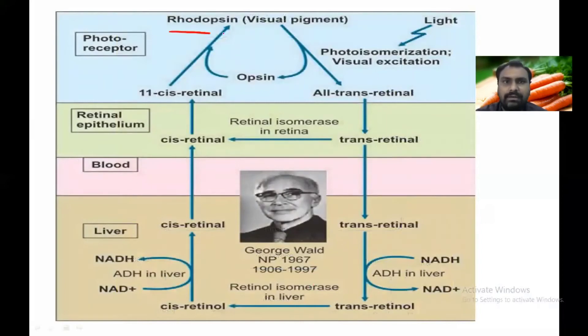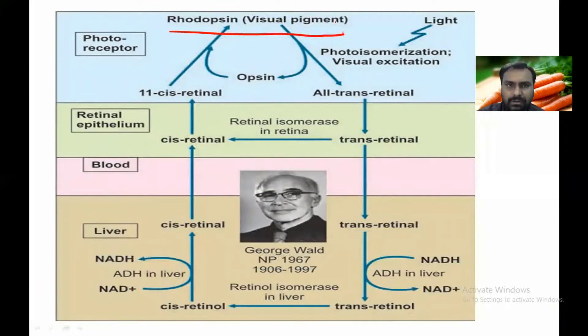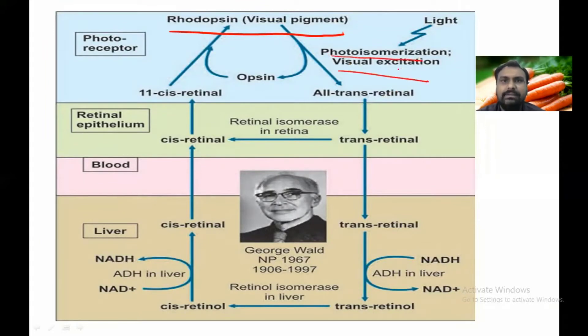This is rhodopsin, the visual pigment present in the rods. When light falls on it, there is a photoisomerization and visual excitation.